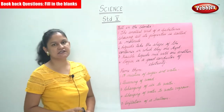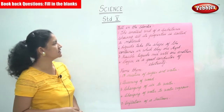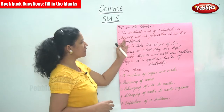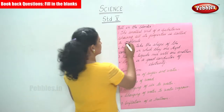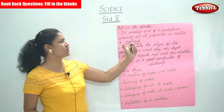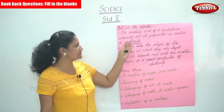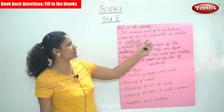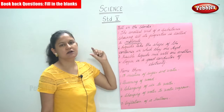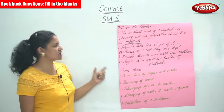We are going to see some more fill in the blanks. The first is: the smallest unit of a substance showing all its properties is called a molecule. Earlier we saw that the smallest unit of a substance is called an atom, whereas here the smallest unit showing all its properties is called a molecule.